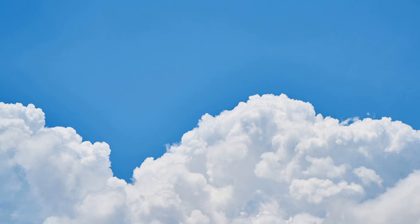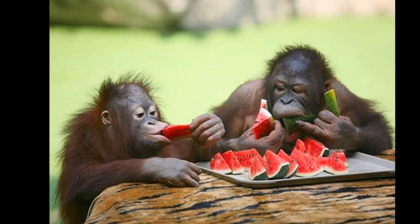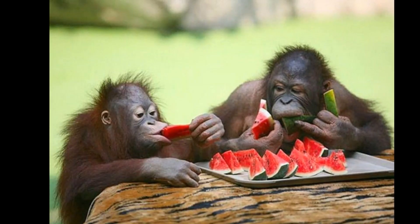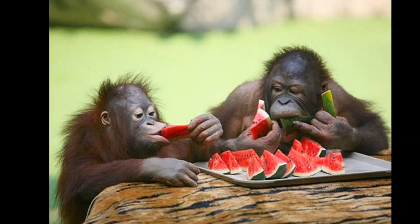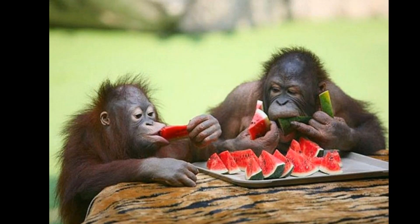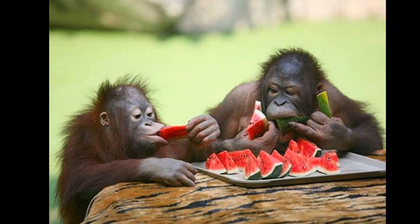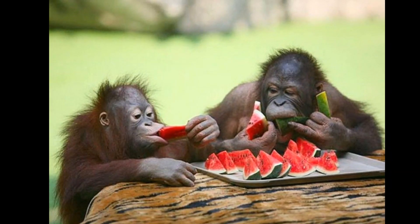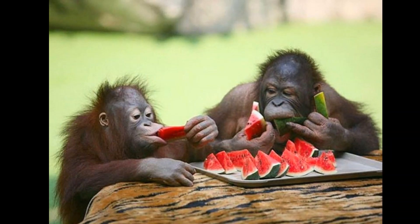All living things need food. Food gives organisms energy and the raw materials needed to carry on their life processes. Organisms use the nutrients from food to replace cells and build body parts. But not all organisms get food in the same way — in fact, organisms can be grouped into three different groups based on how they get their food.